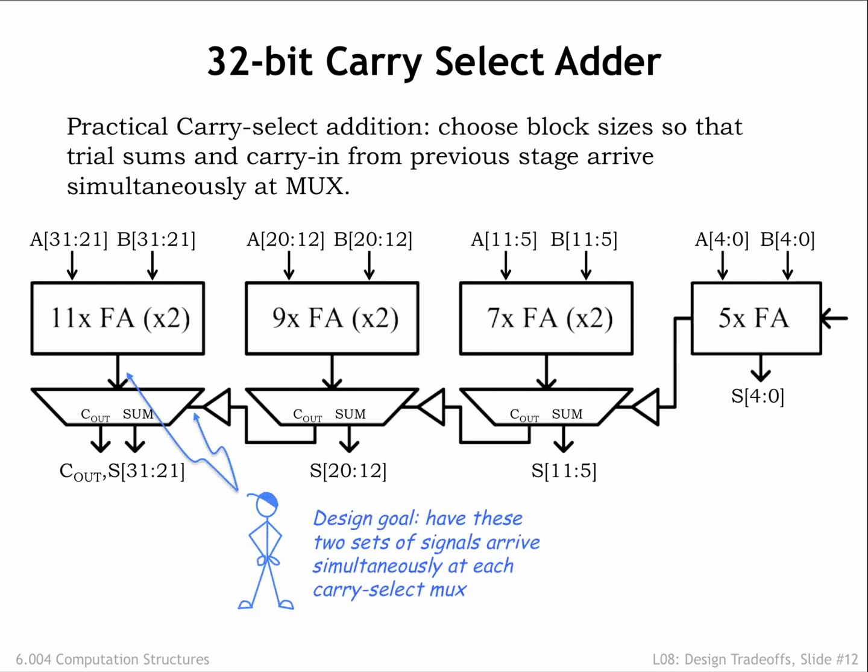The size of the adder blocks has been chosen so that the trial sums and the carry-in from the previous stage arrive at the carry-select MUX at approximately the same time. Note that since the select signal for the MUXs is heavily loaded, we've included a buffer to make the select signal transitions faster.